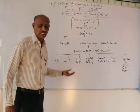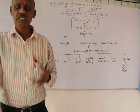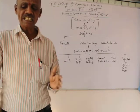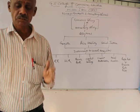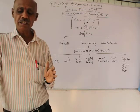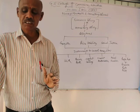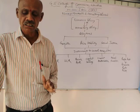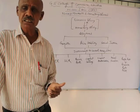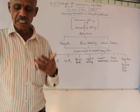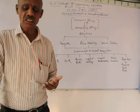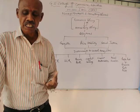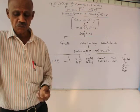The next one is statutory liquidity ratio. Every financial institution has to maintain a certain quantity of liquid assets with themselves at any point of time out of their total time and demand liabilities. These assets have to be kept in non-cash form such as government securities, precious metals, approved securities like bonds and certificates, etc. The ratio of the liquid assets to the time and demand liabilities is termed as the statutory liquidity ratio.